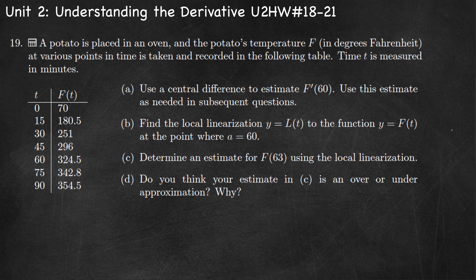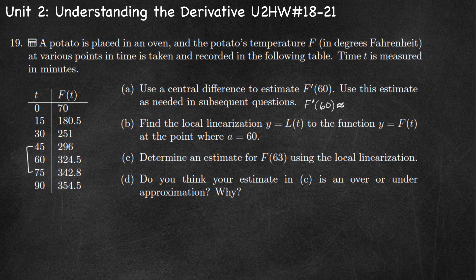Number 19: a potato is placed in an oven and its temperature f in degrees Fahrenheit is recorded at various times t in minutes. Part A: use a central difference to estimate f prime of 60. We find the slope of the secant line using the two surrounding points: (45, 296) and (75, 342.8). That gives 342.8 minus 296 over 75 minus 45, which is approximately 1.56 degrees Fahrenheit per minute.